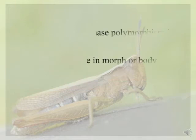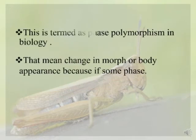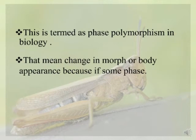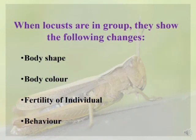This is termed phase polymorphism. In biology, polymorphism means a change in morph or body appearance due to a phase change. When locusts are in a group, they show the following changes: first, body shape; second, body color; third, fidelity of movement.